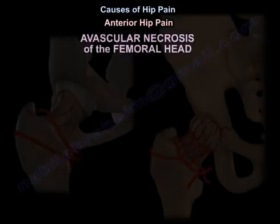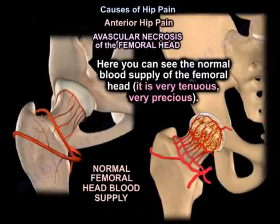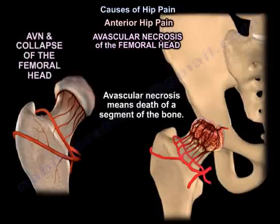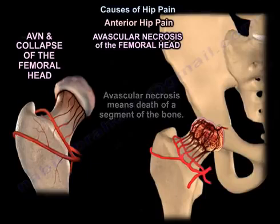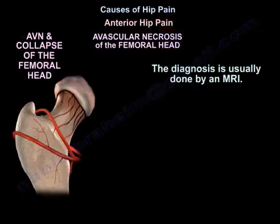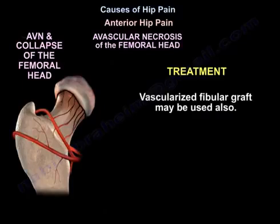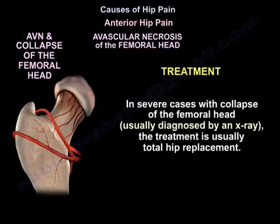Another entity that causes anterior hip pain is avascular necrosis of the femoral head. The normal blood supply of the femoral head is very tenuous. When the blood supply is interrupted, a segment of the bone dies, becomes necrotic, and the femoral head will collapse. Diagnosis is done by MRI. In early stages without collapse, treatment involves decompression by drilling of the affected segment to bring new blood supply to the area. In severe cases with collapse, diagnosed by x-ray, the treatment is usually total hip replacement.